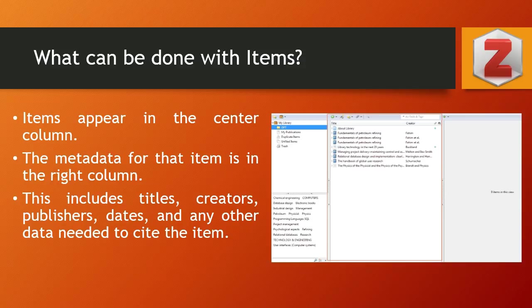It is quite similar to the Mendeley reference management tool. Items appear in the center column, and the metadata for each item is displayed in the right column. This includes title, creator, publisher, date, DOI, and any other data needed to cite the item.